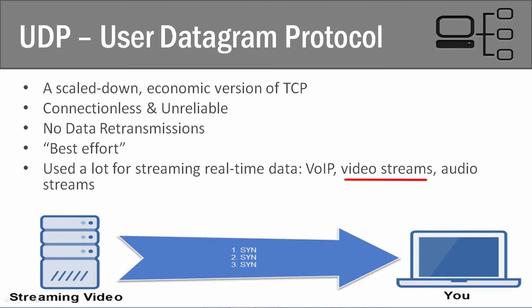Another example would be video streaming — specifically live video streaming, not YouTube, but connecting to a live video stream. For example, if you're watching a live video stream of a sporting game, it's okay if a couple of packets of information don't get through because, for the most part, your system is going to be able to decode what that is. You may have a little bit of garbled information here and there, but you'll be able to watch that live streaming video.